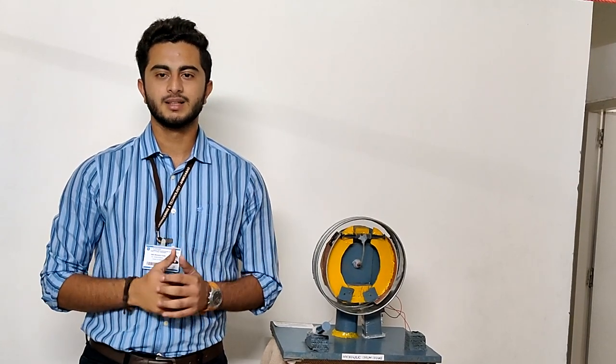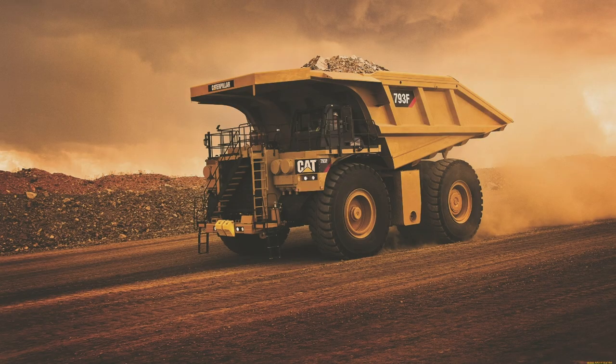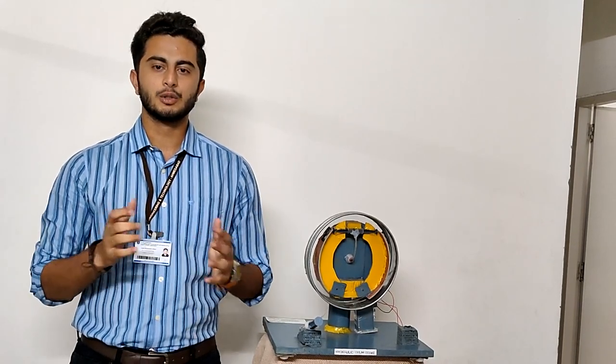Drum-type hydraulic brakes are used in some low-speed four-wheel vehicles such as hatchback, sedans, SUV, etc. It is also used in cranes, elevators, aircraft, and mining vehicles. Some low-speed two-wheelers are also using this system such as Pulsar, Hunk, etc.